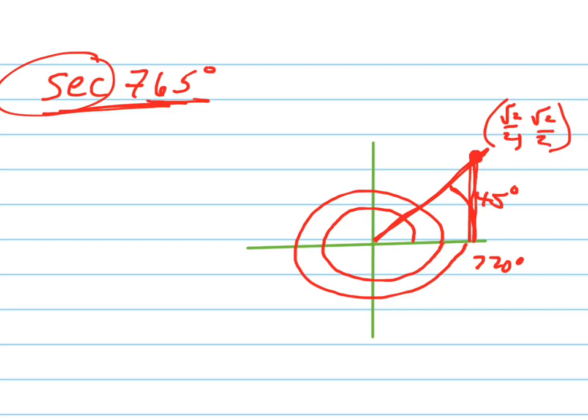So the secant is 1 over the cosine. And what's the cosine? Which one of these is the cosine? X or Y? The first one, X. The X is the cosine, right?